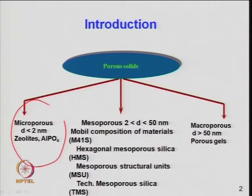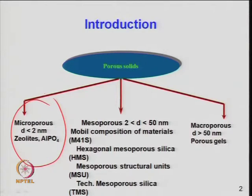For catalytic activity, we categorize the microporous material, which may have a pore size less than 20 Ångström or 2 nanometers, which can be silico-alumino-phosphate material or calcium aluminate silicate — aluminosilicate materials where alumina-silica T-atoms can be attached.